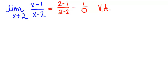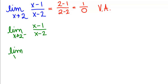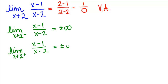Now that we know we're dealing with a vertical asymptote, we look at the limit on each side — the limit as x goes to 2 from the left, and the limit as x goes to 2 from the right. We know the answers for those one-sided limits have to be either positive or negative infinity. But how do we know which one it is?